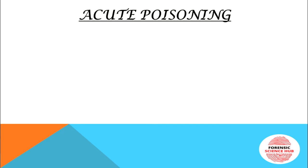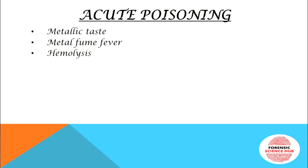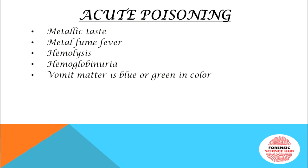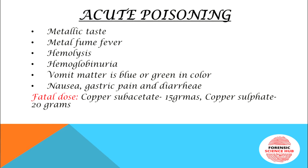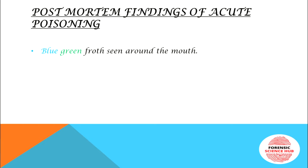In acute poisoning, symptoms include metallic taste, metal fume fever, hemolysis, hemoglobinuria (blood in urine), vomiting that is blue or green in color, nausea, gastric pain, and diarrhea. The fatal dose for copper subacetate is 15 grams and for copper sulfate is 20 grams.